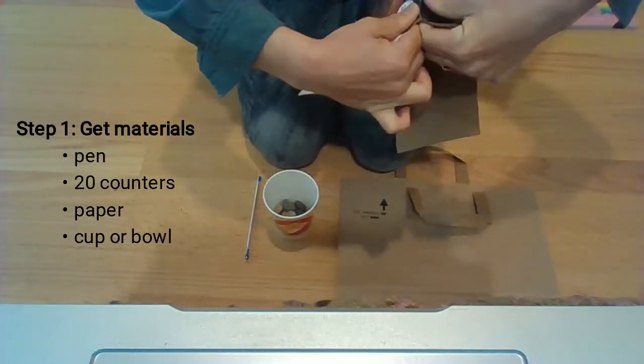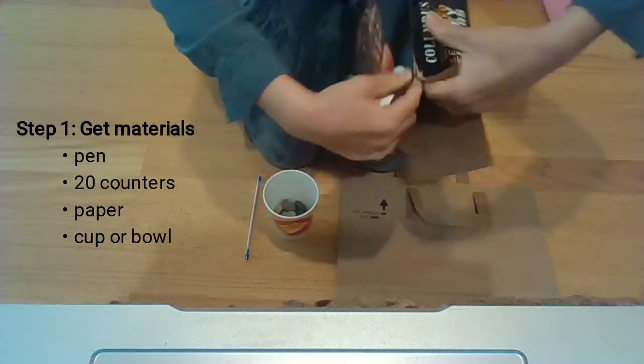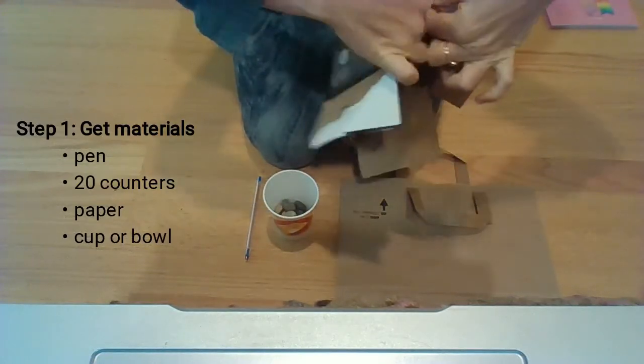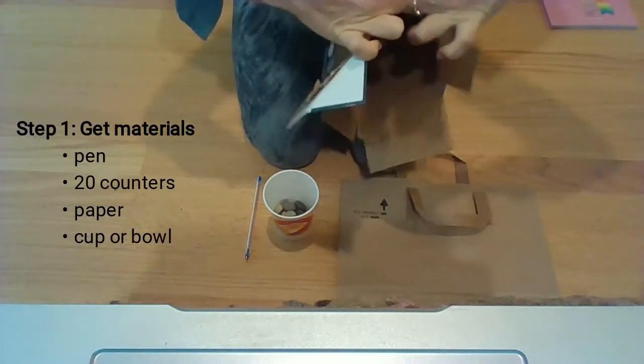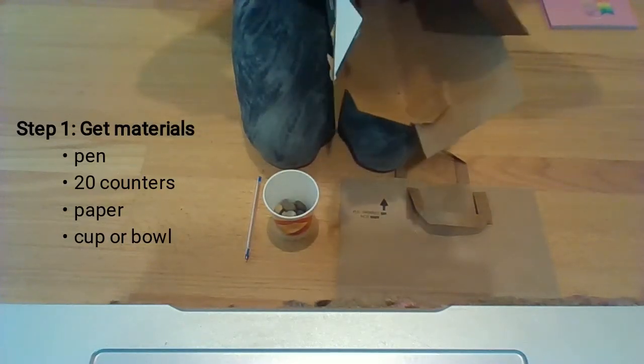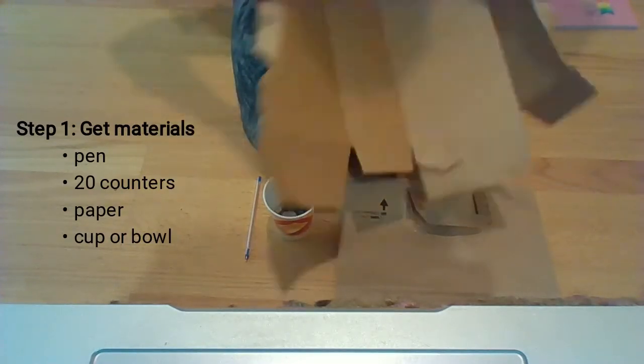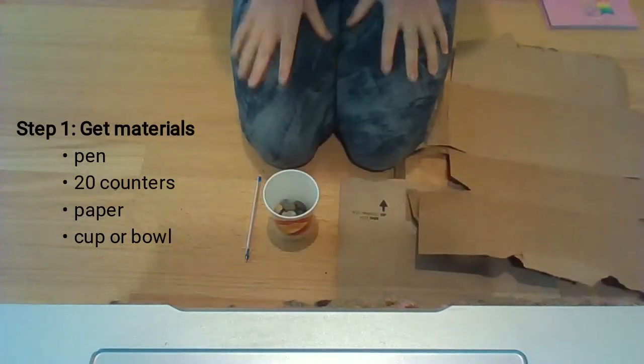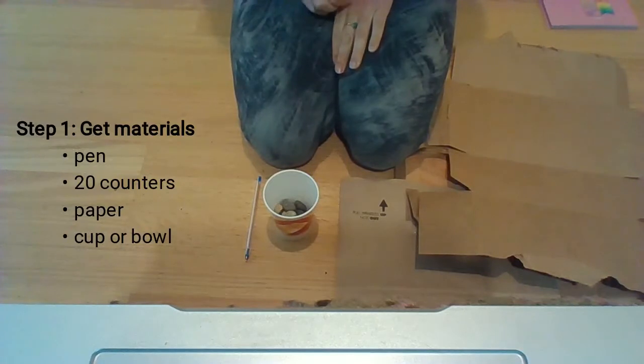So I'm going to rip open this box along the edge like this and it doesn't have to be perfectly straight. I just want my box to open. There! Now I have a lot of writing space and I'm not even using any paper. So that's the first thing that you need to do.